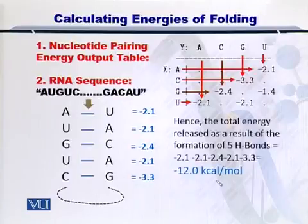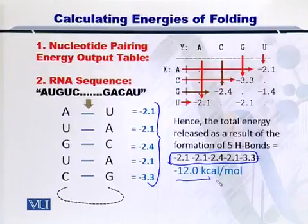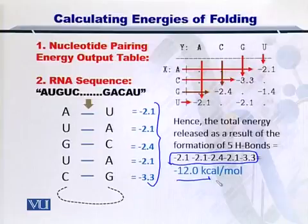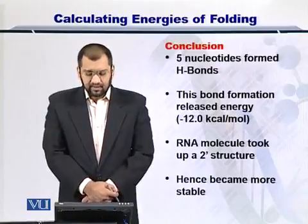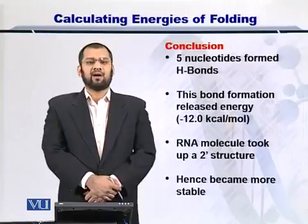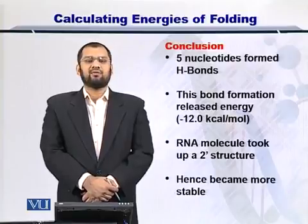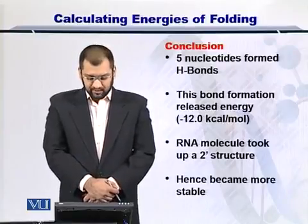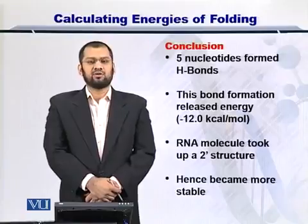Upon addition of all these energy values, we know that minus 12 kcal has been given out. The minus indicates that the energy is released in the process, and we know that if the RNA molecule folds and energy is given out, the RNA molecule becomes more stable. To conclude, the nucleotides that are bonding together by making hydrogen bonds incur stability onto the RNA structure and give it a functional quality. The net energy that was released in the example we just saw was minus 12 kcal per mole.